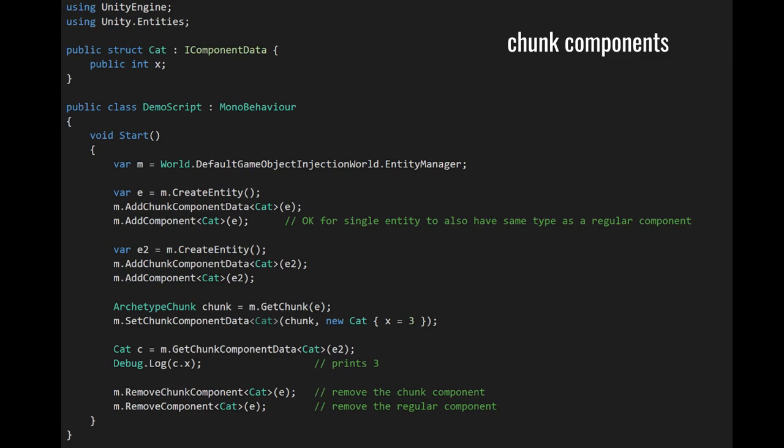To access a chunk component value, we can do so via the chunk, but also more conveniently through an entity. When we call getChunkComponentData passing in E2, we're getting the cat of the chunk in which E2 belongs. Because our two entities both belong to the same archetype and there's only two of them, they're virtually guaranteed to be stored in the same chunk. So when we print out the x of this cat from E2, it prints 3. When we remove a chunk component, because it's distinct from a regular component, there's a special method, removeChunkComponent. The first method removes the chunkComponentCat, the second removes the regular cat component.